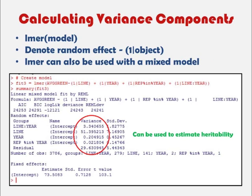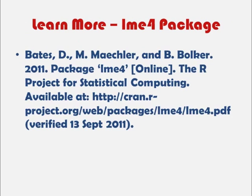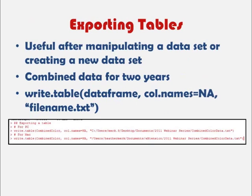We use the LME4 command within this package to look at our model with random effects. We denote an effect as random by entering 1, the bar, and then the name of our object. This LME4 command can also be used with mixed models, though in this case we've denoted all of our effects as random. By using the summary command on our model, we can derive the variance components, which can be used to estimate heritability. To learn more about the LME4 package, refer to the online documentation, which is freely available.